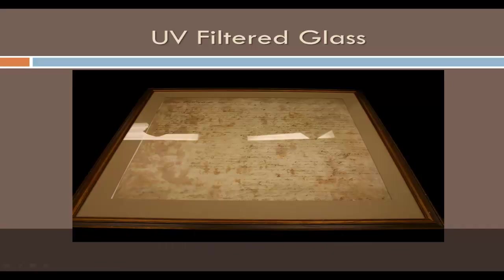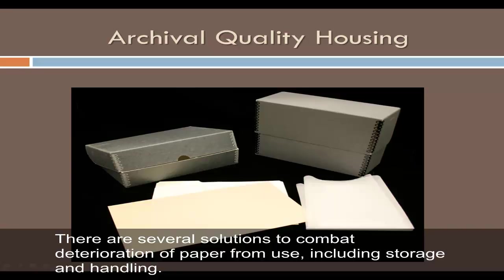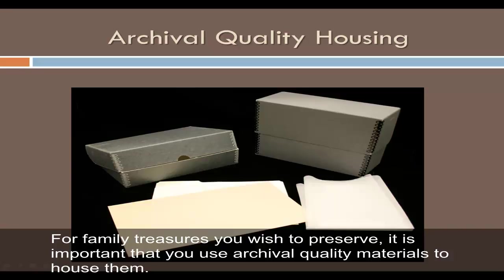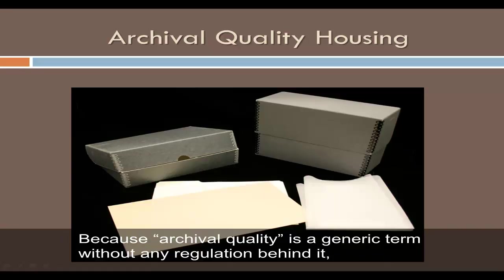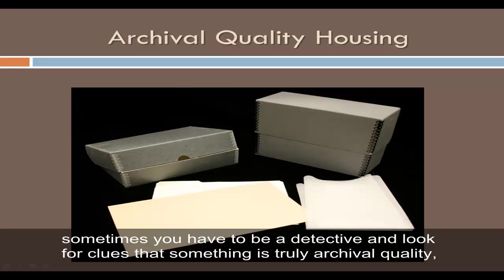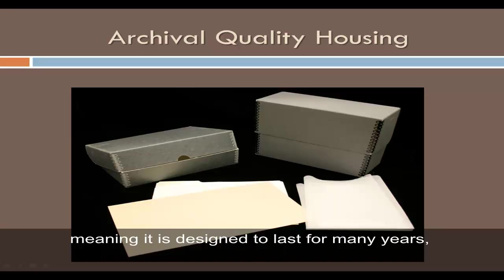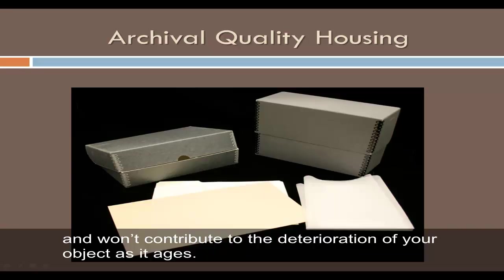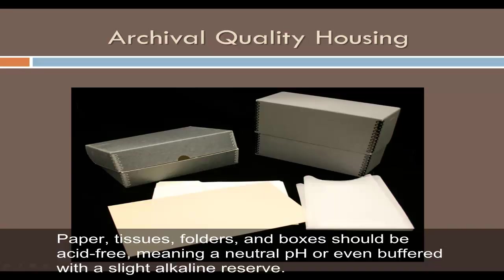There are several solutions to combat deterioration of paper from use, including storage and handling. For family treasures you wish to preserve, it is important that you use archival quality materials to house them. Because archival quality is a generic term without any regulation behind it, sometimes you have to be a detective and look for clues that something is truly archival quality — meaning it is designed to last for many years and won't contribute to the deterioration of the object as it ages. Paper, tissues, folders, and boxes should be acid-free, meaning a neutral pH or even buffered with a slight alkaline reserve.